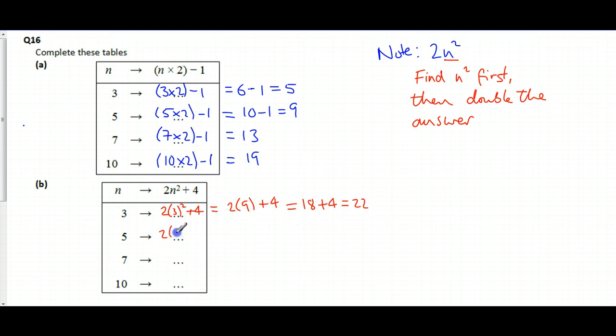Well, in this case, 2 lots of 5 squared plus 4. Well, 5 squared is 5 times 5, which is 2 lots of 25, and then add on 4, or in long, 50 add 4, which is 54.